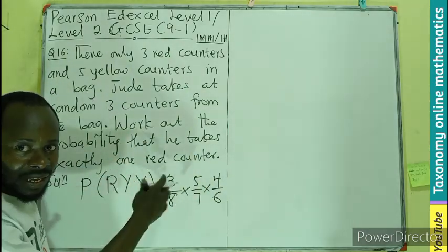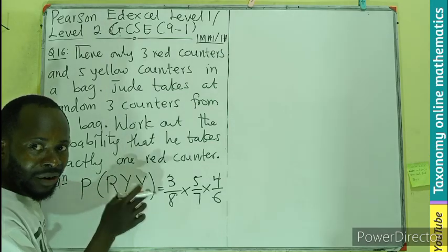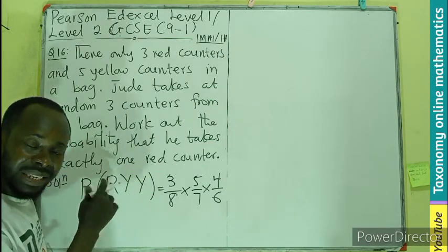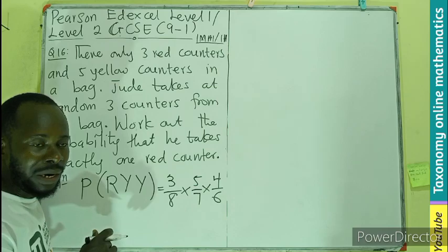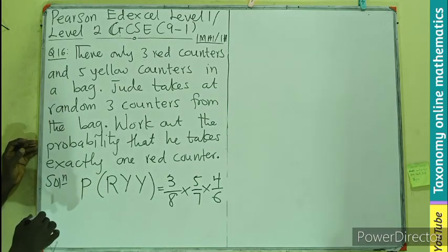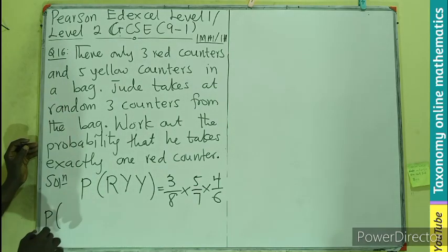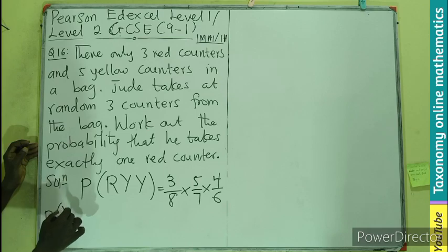That is the probability for picking exactly one red, whereby the first is red, the remaining ones are yellow. Then it could also be in the sense that the first pick was yellow, the second pick was red, and the third pick was yellow.